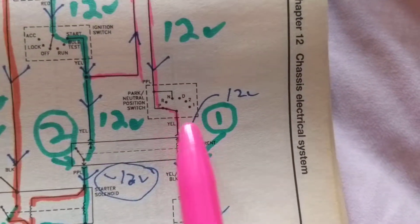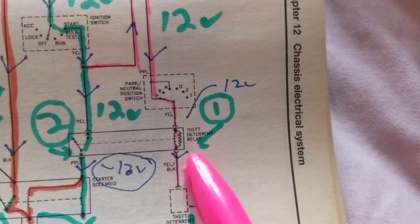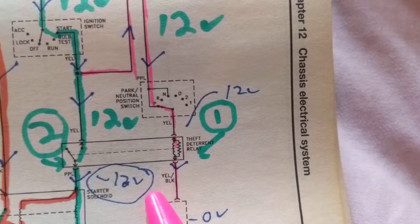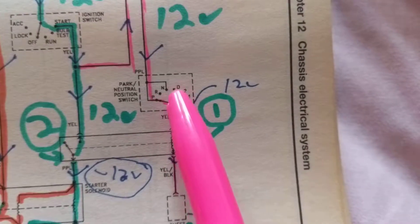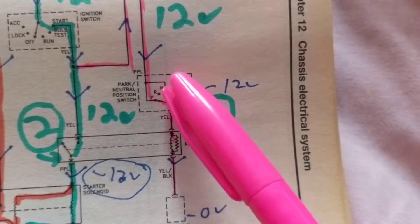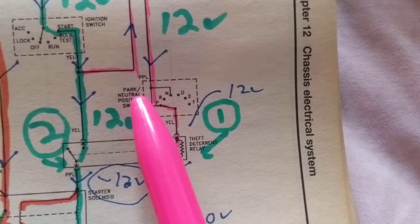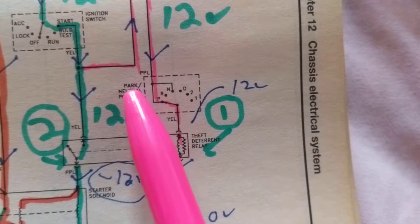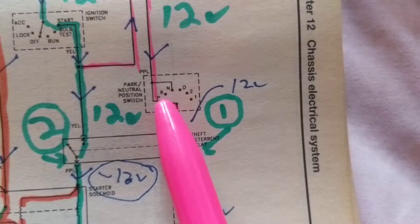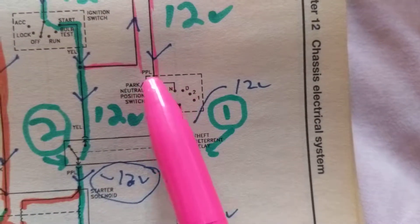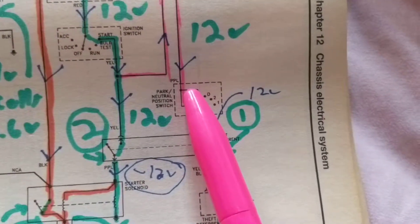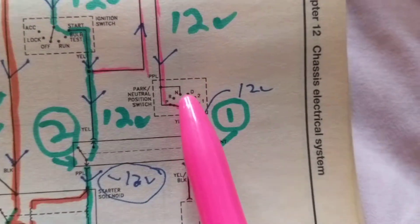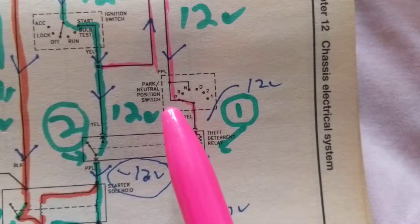Now, which position do we have to be in for the current to flow for this relay? We can only be, again, in the park position. Any other position, if you notice, there are no connections. Therefore, it's an open circuit. Therefore, and when it's in the park or neutral, in this case, that's why it's called park neutral positions, which you could be in the park, you could be in the neutral. You see, either one has a connection, but not drive, not second, not first, and not reverse.